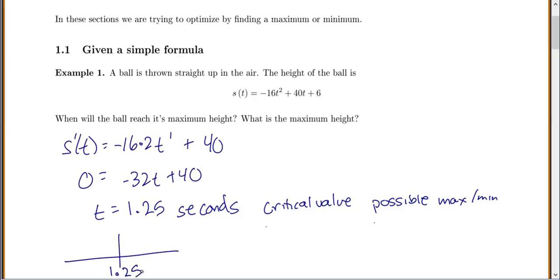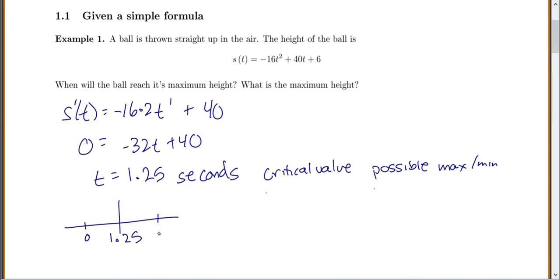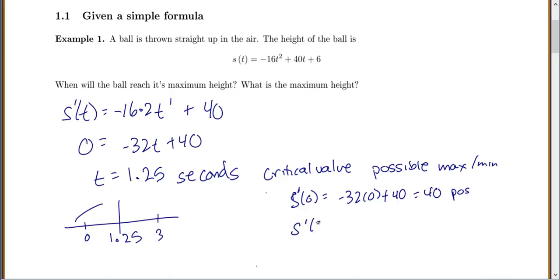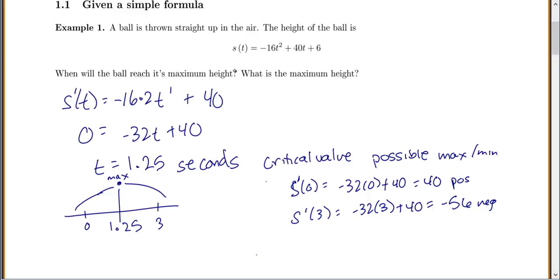To see if it's a max or min, you draw your number line and plug in points from either side into your first derivative. So s′(0) = negative 32 times 0 plus 40 = 40, which is positive, so we'd be going up. And s′(3) = negative 32 times 3 plus 40 = negative 56, so we'd be going down. Going up then down means we have a maximum there, which is what we wanted — the ball reaches its maximum height at t = 1.25 seconds.